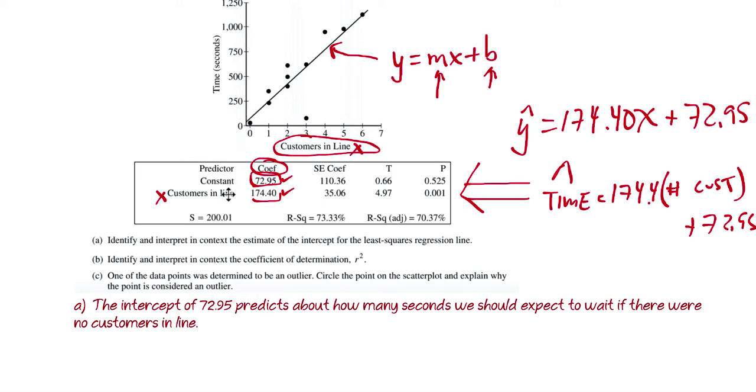It's giving you, you need to convey the idea that this is a prediction. It's a model that we're going to use as a tool to figure out what it should be, what we could expect. We also have to talk about the fact that there would be zero customers in line because that's what a y-intercept is. So we put that in there, no problem. So next, part B.